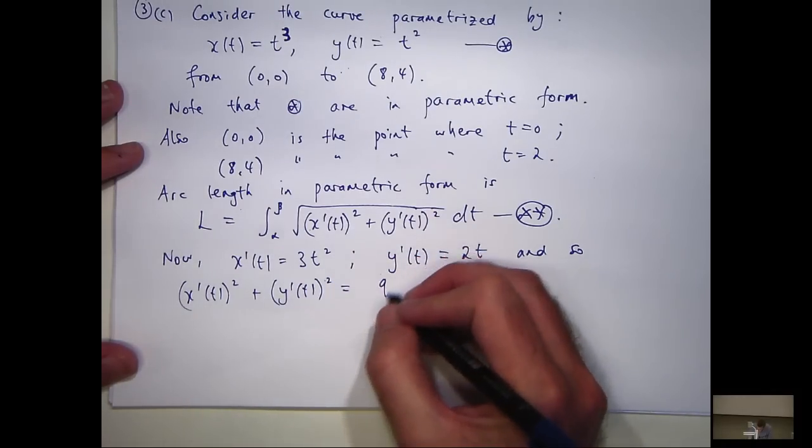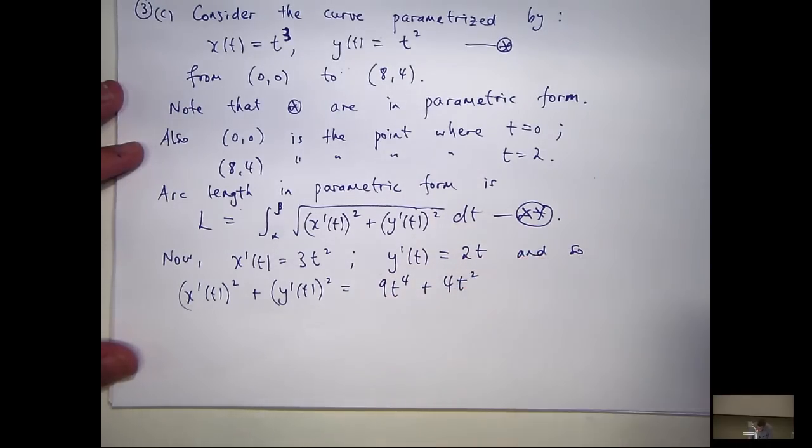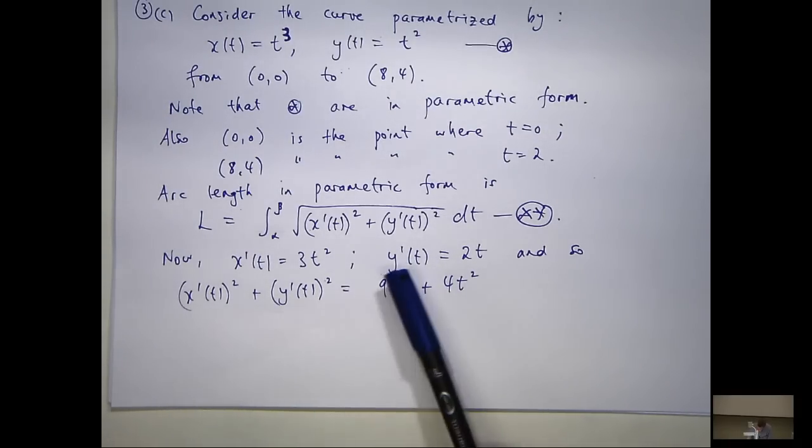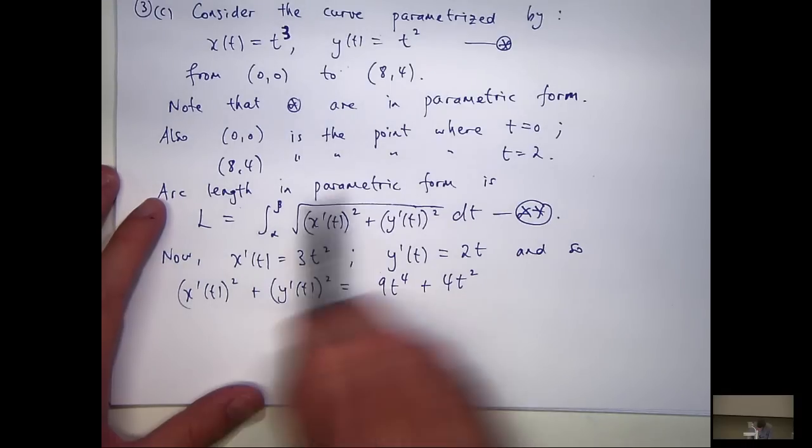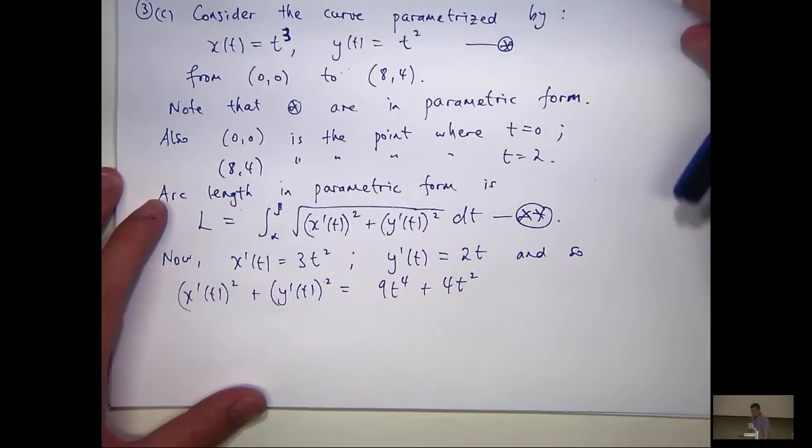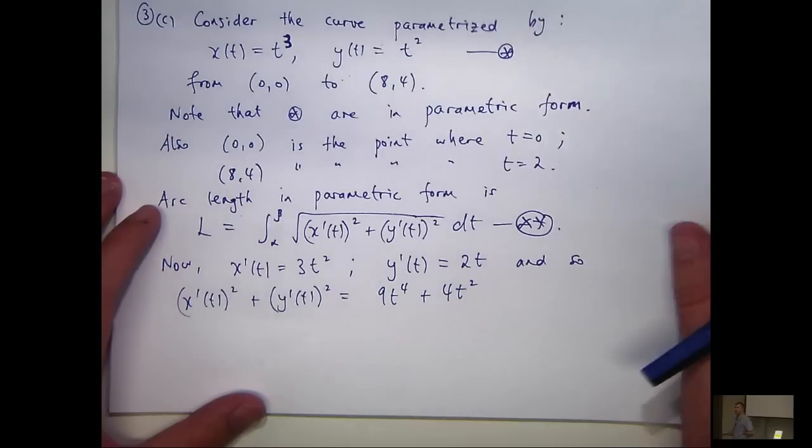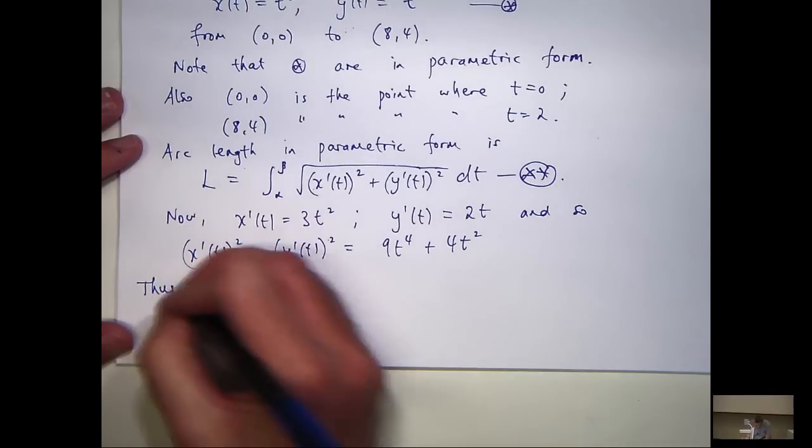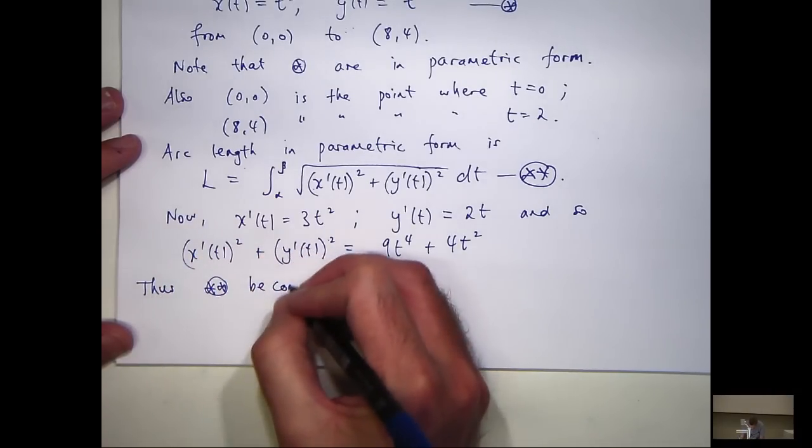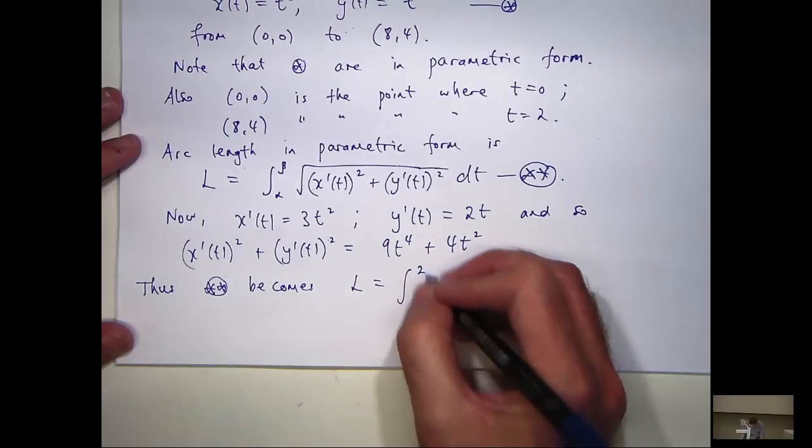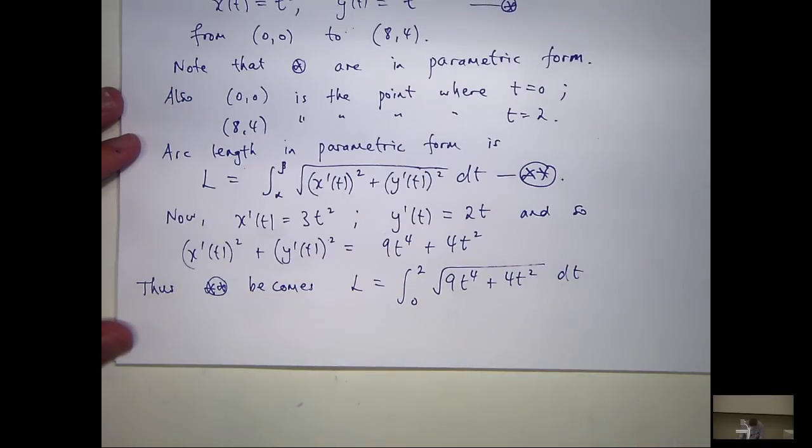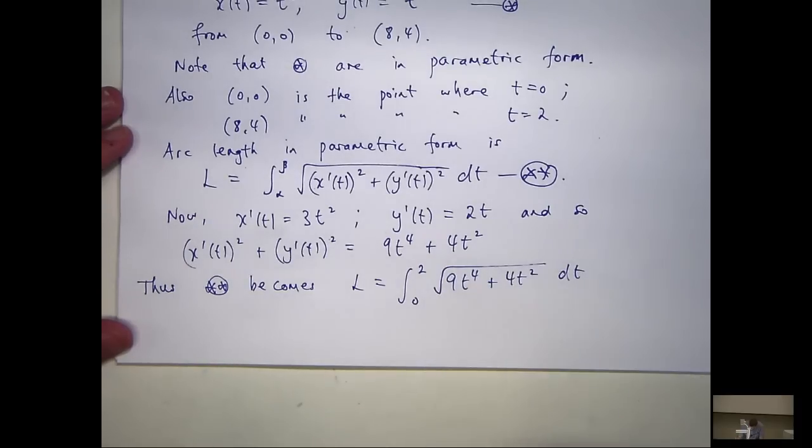Okay, so, let's square those. I'm going to get nine t to the power four plus four t squared. Now, you can see there's a common... We're going to have to take the square root of this. There's a common factor of t squared, and actually, that's going to help us in the integral. So, let's take this, put it back in here, and integrate from t equals zero to t equals two. All right, let's take out a factor of t squared in here, and that square root of it will just give you t.